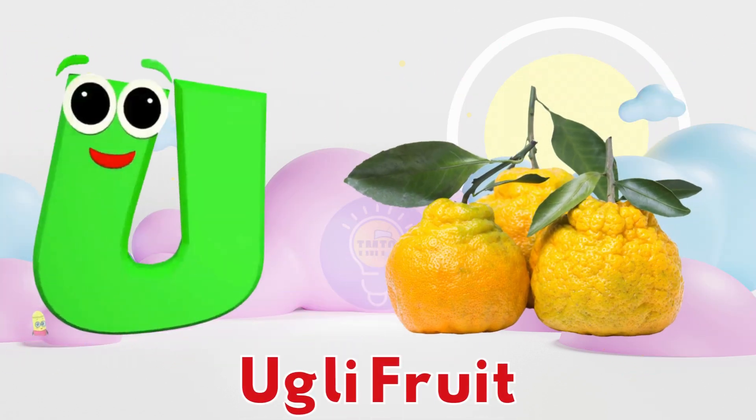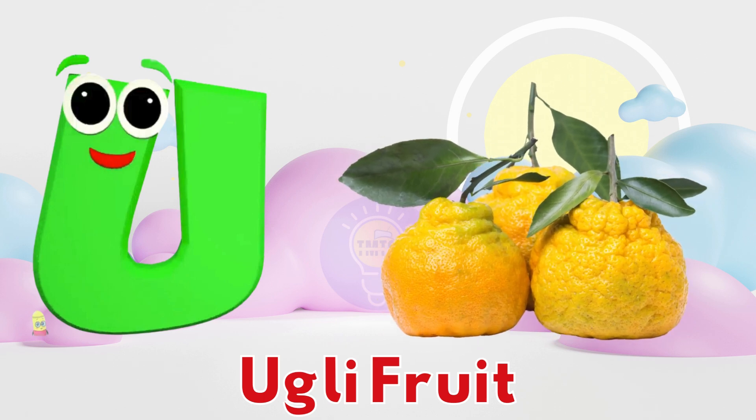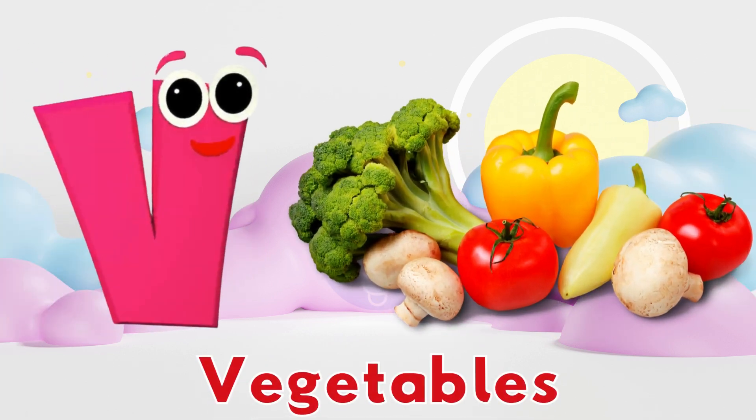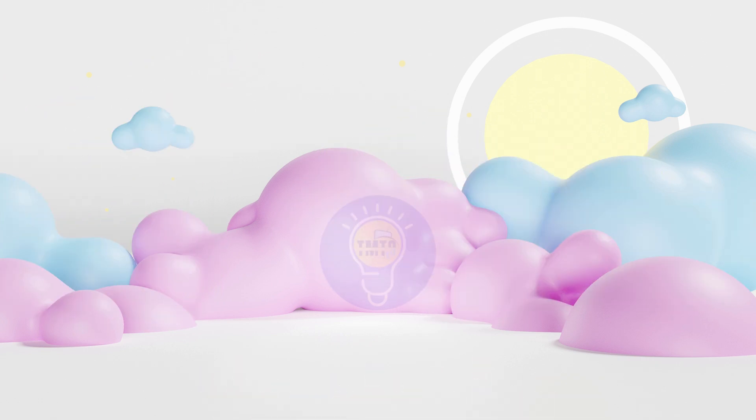U is for ugly fruit, ugly fruit. V is for vegetables, vegetables.